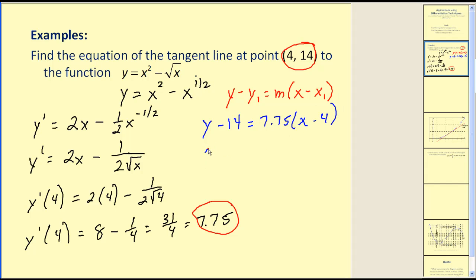We'll solve this for y. Add 14 to both sides, and we have y is equal to 7.75x minus 17.